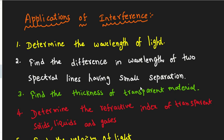The first application is to determine the wavelength of light. For example, using Newton's rings experiment, we can find the wavelength using the formula: lambda equals (dm² minus dn²) divided by 4r into (m minus n). We can also determine the wavelength of two spectrum lines.